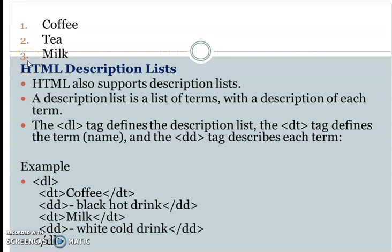The third type of list is the description list. We will define the description list using specific tags. The description list is used to define terms and their descriptions.